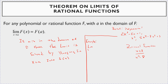For example, the limit as x goes to 2 of 2x³ - 5x + 1: does 2 exist in the domain of this polynomial? Absolutely — the domain of a polynomial is all real numbers. So you plug it in: 2 times 2³ minus 5 times 2 plus 1. Well, 2³ is 8, times 2 is 16; 5 times 2 is 10, plus 1. This ends up being 7. So if you can plug it into the function and it doesn't make the function undefined, just plug it in — that's how you evaluate the limit.